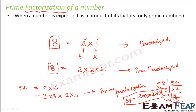So you start with the smallest prime number by which that number is exactly divisible, then write its quotient and repeat the process with the smallest prime number possible. Continue this until you get 1, then represent that number as a product of the prime factors.